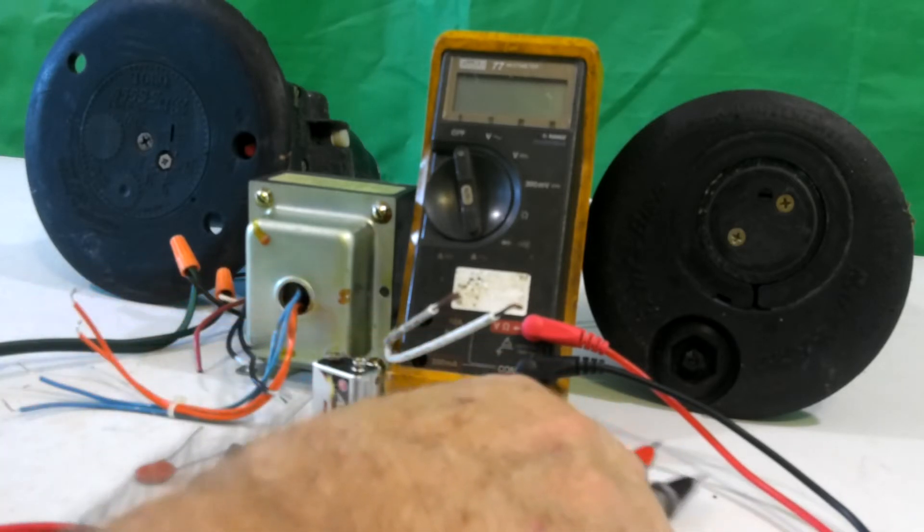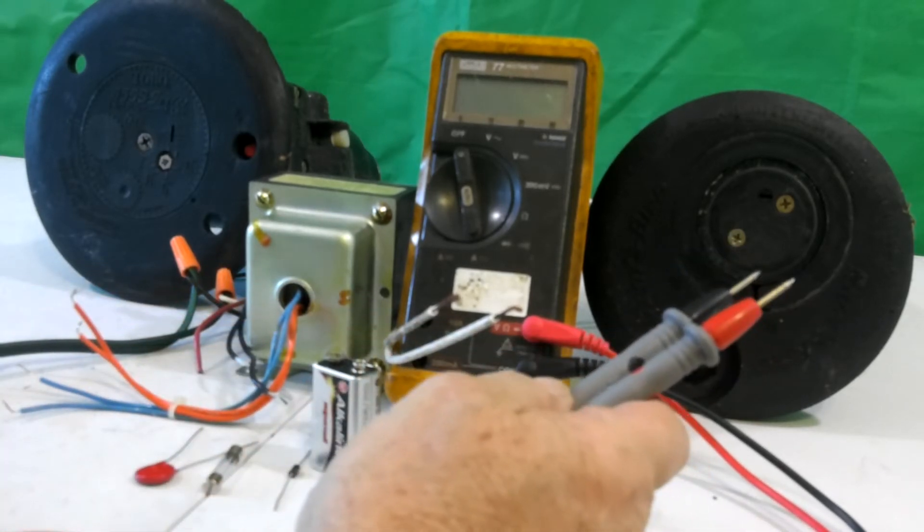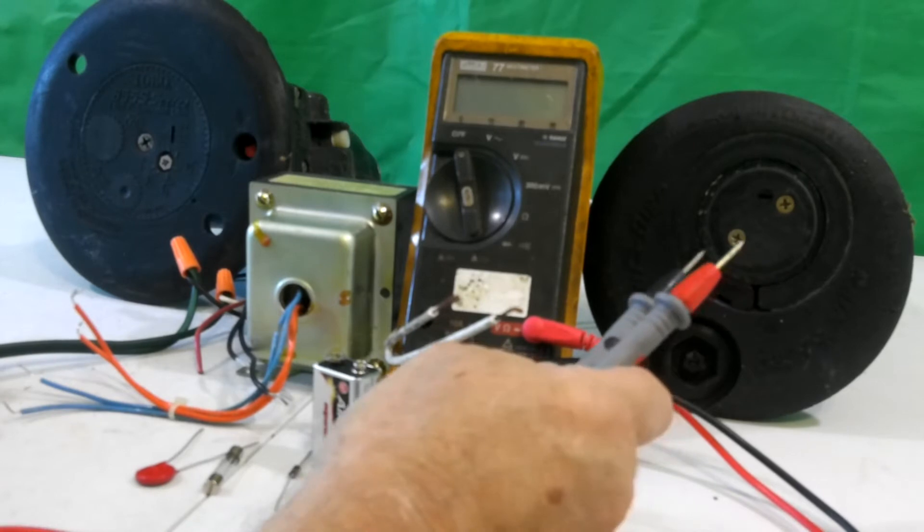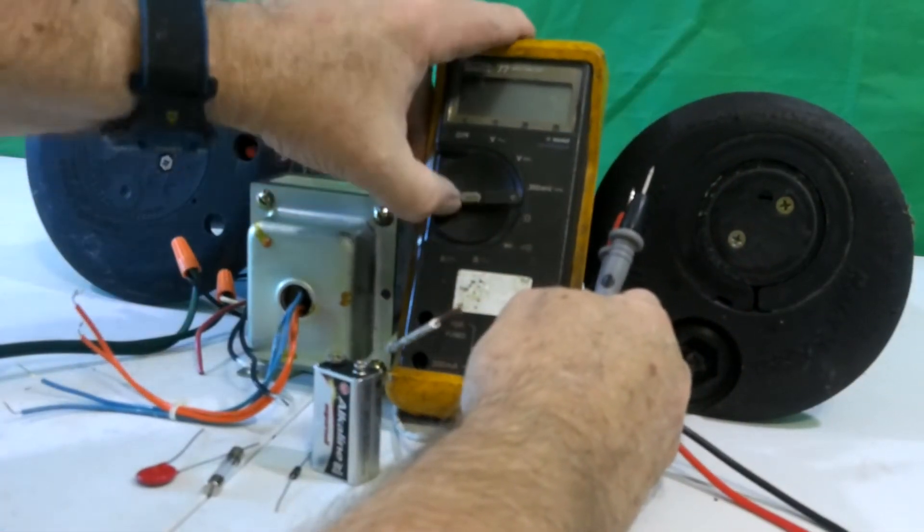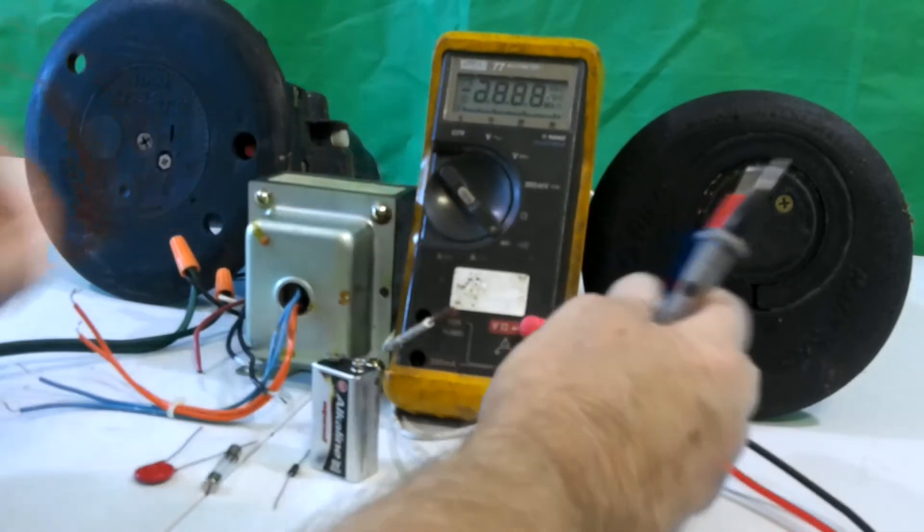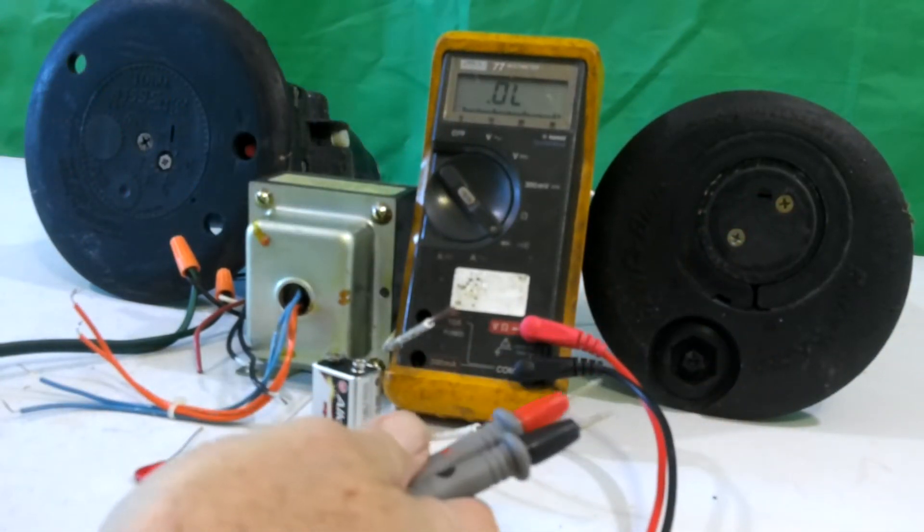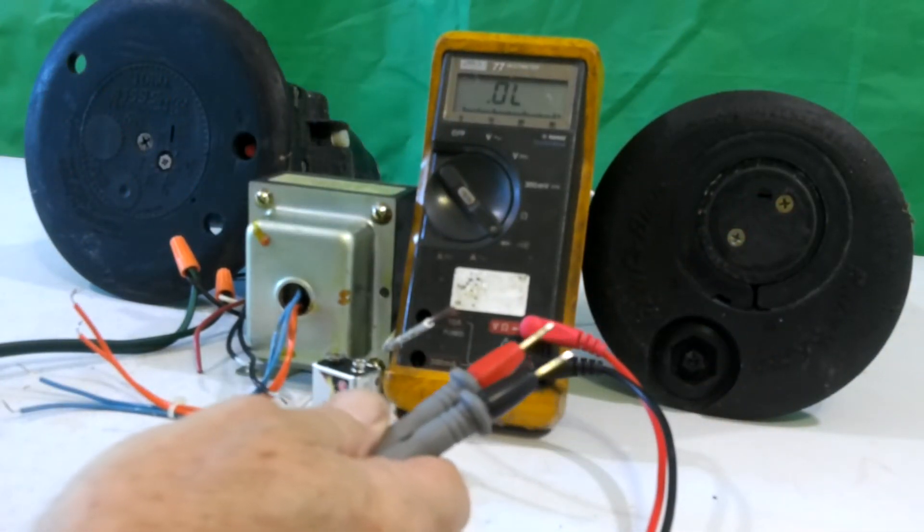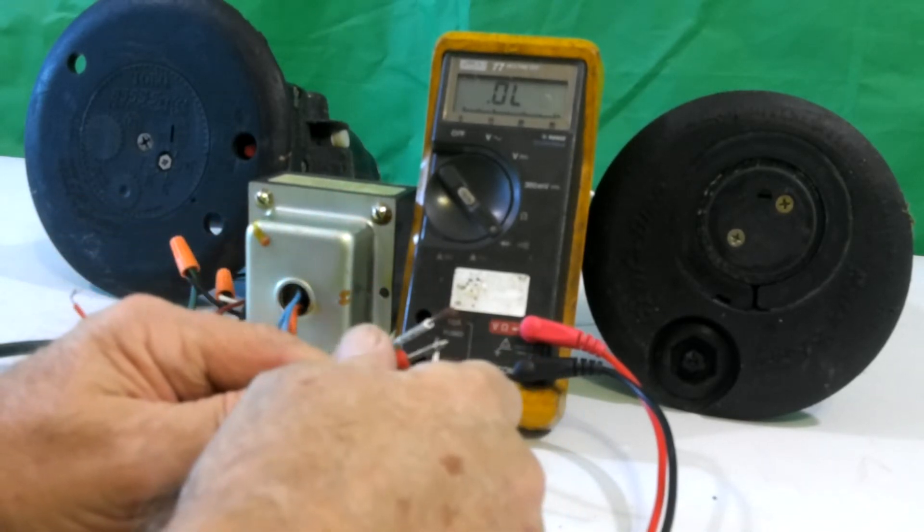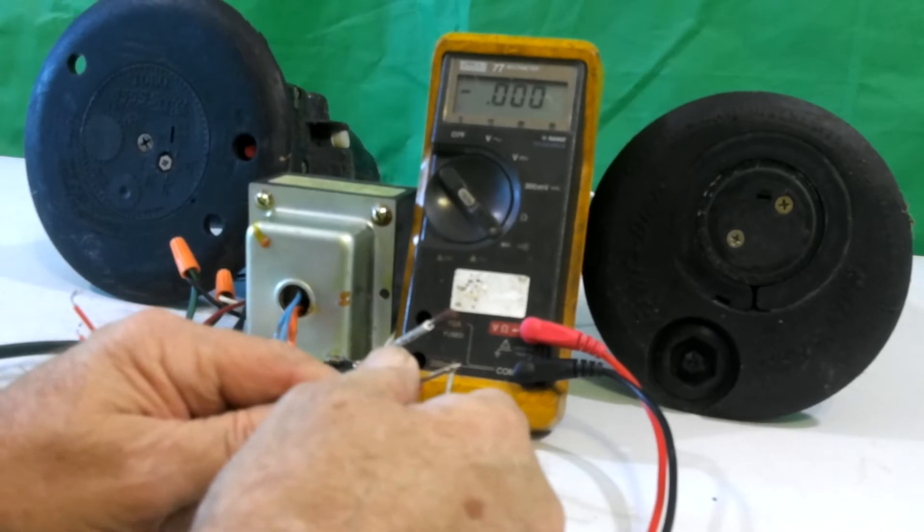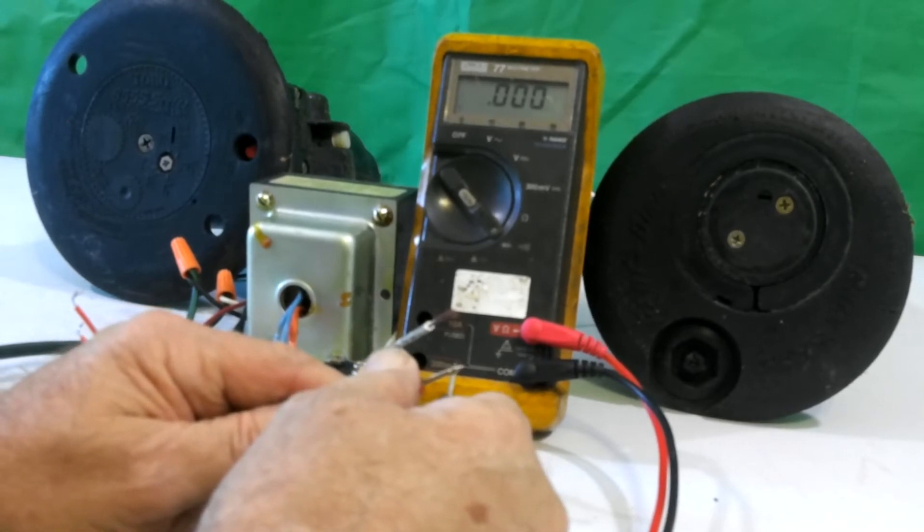First thing is I'm going to be looking for continuity, which is a continuous connection. So to do that I move this meter down to where it would read for continuity. When it settles in it will read OL, which is open line. If I connect the two probes together, it'll now show me all zeros, which is a direct short.